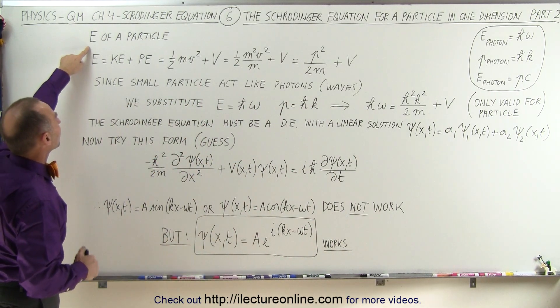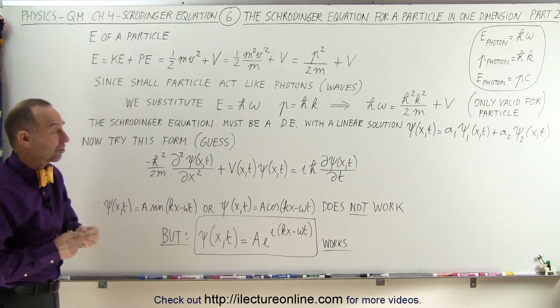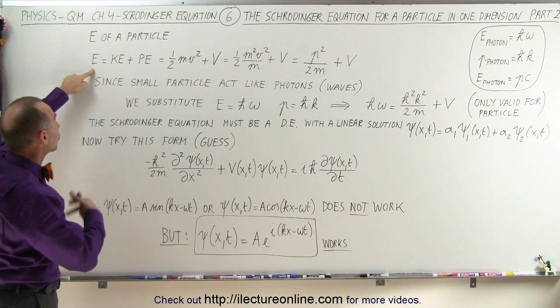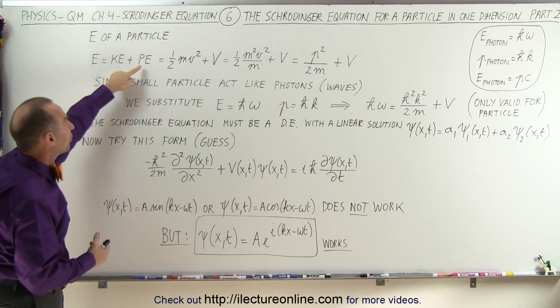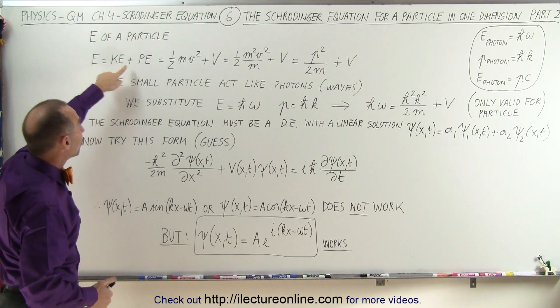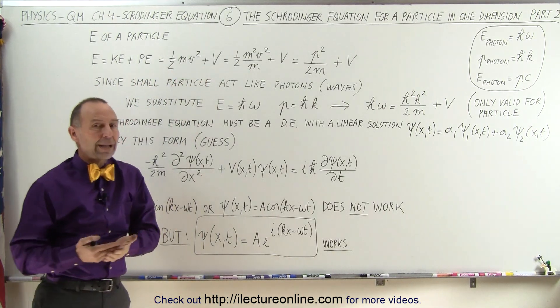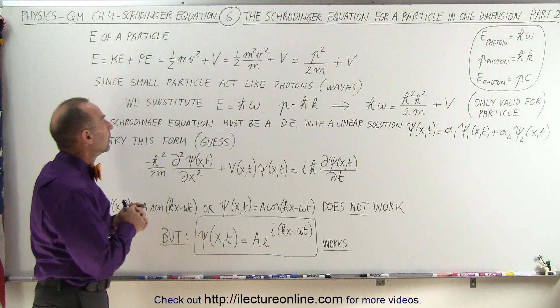Next, we're trying to find an equation that describes the energy of a particle that has mass, which means the energy will be the sum of the kinetic energy plus the potential energy of that particle. The kinetic energy will be 1/2 mv². The potential energy can be represented by the letter V.